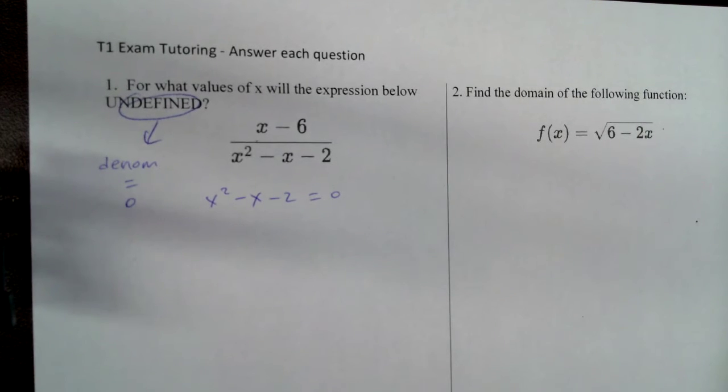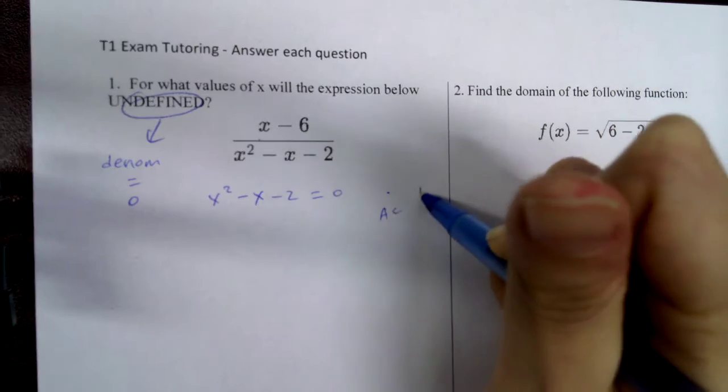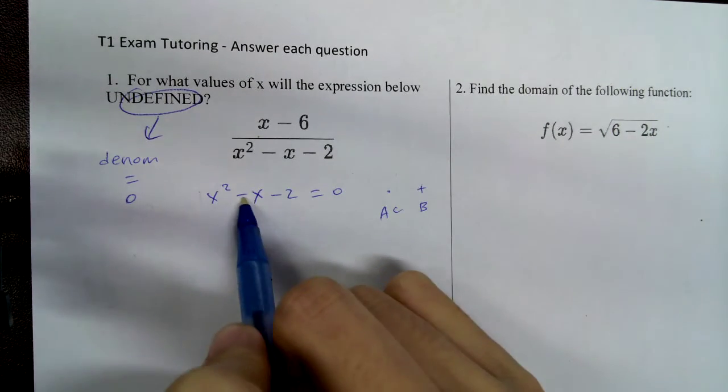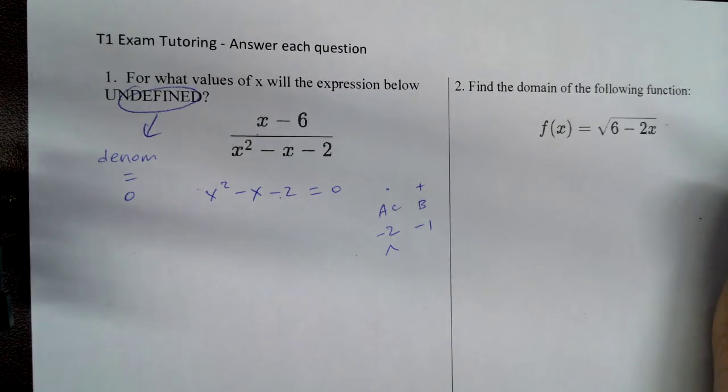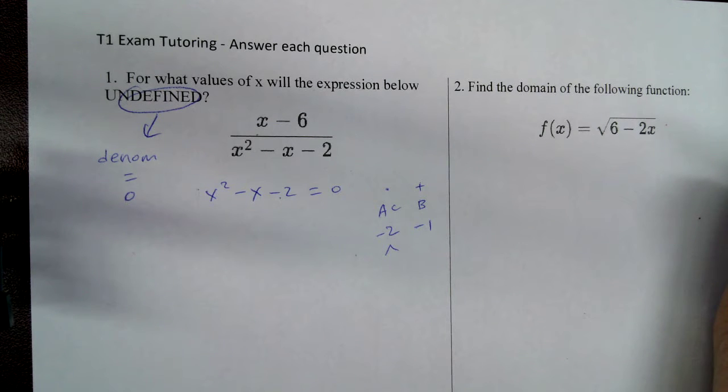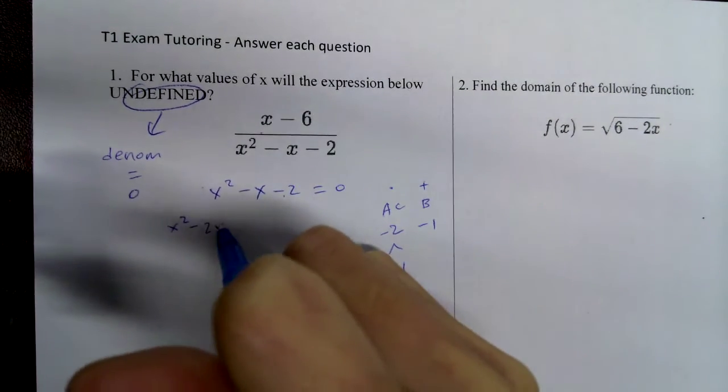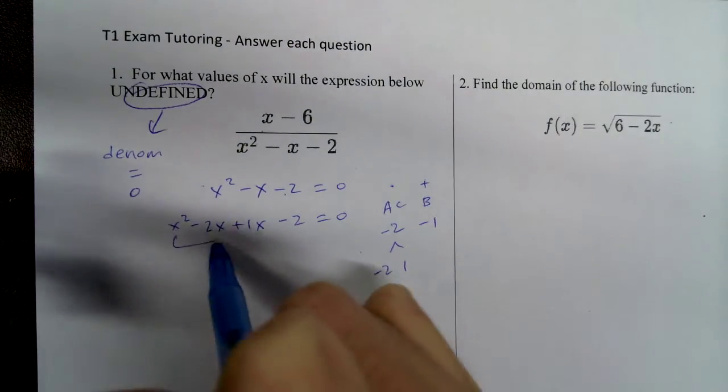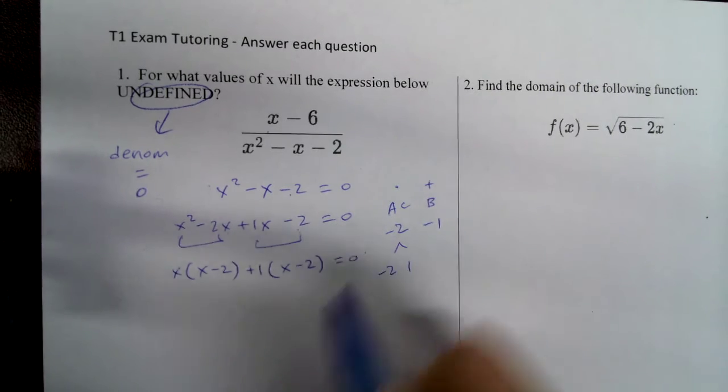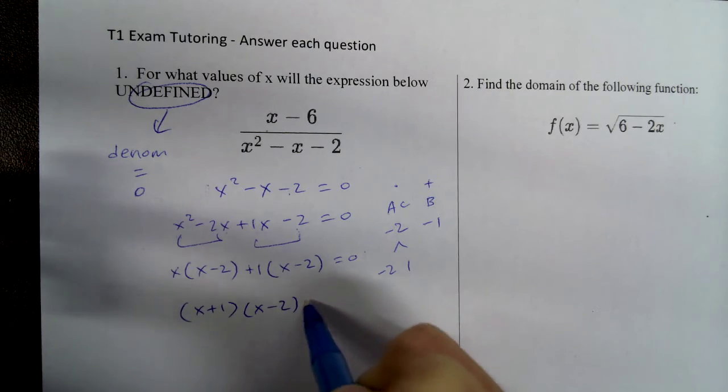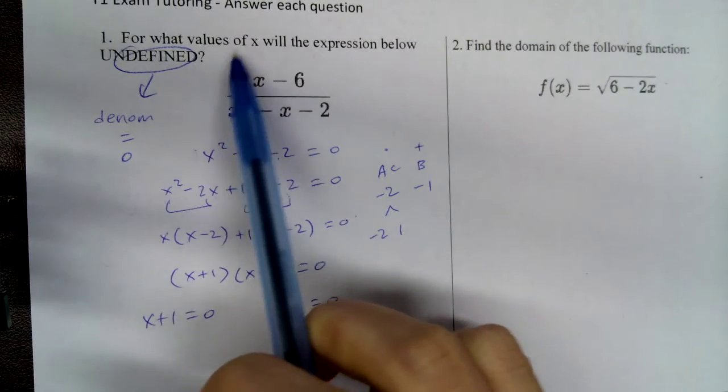We're going to go ahead and solve this problem. So you can do quadratic formula. However, my preference is AC method. A is 1, B is negative 1, C is negative 2, 1 times negative 2. So I need to think of two numbers that multiply to negative 2 but add up to negative 1. Negative 2 and 1. So then, I rewrite the middle term. I pair up. Factor out the GCF. Factor out the GCF. Finish factoring. Set each factor equal to zero. Because this says, solve for the value of x.